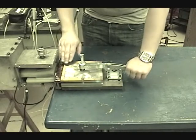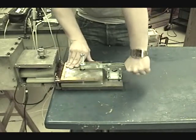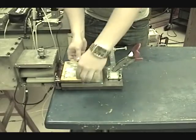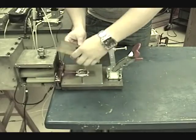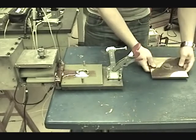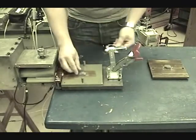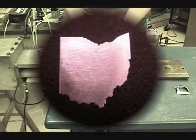Following discharge of the capacitor bank, we remove the clamp and the shearing tool. We now have our scrap and our electromagnetically sheared part. OH! I-O!